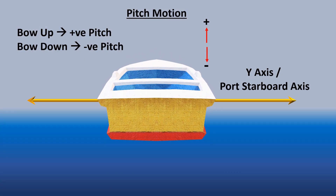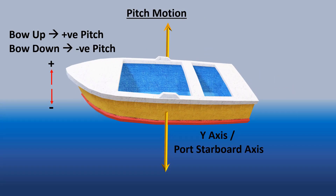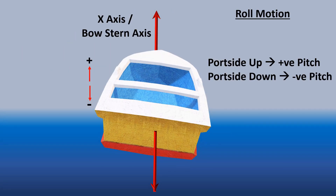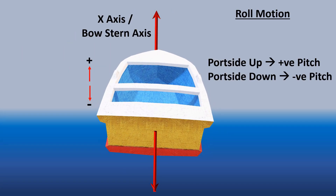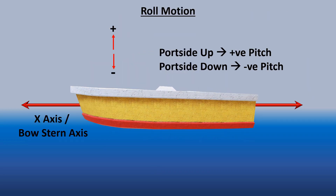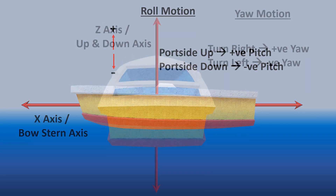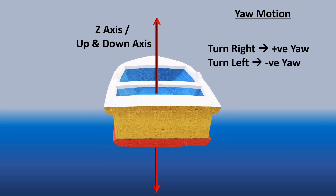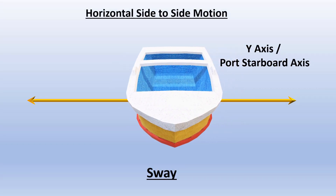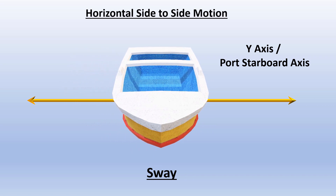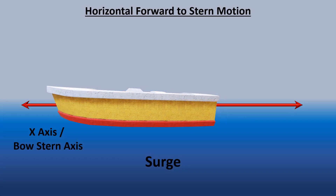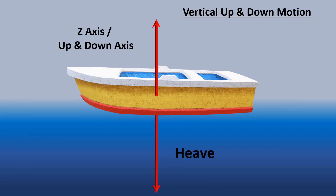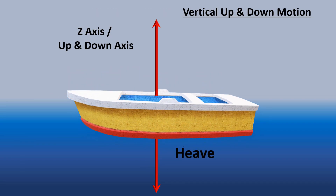This is pitch, looking from the back and from the side. Same way, roll looking from the back and from the side. Yaw as seen from the back. Sway is horizontal side-to-side movement. Surge is forward-to-back movement. And heave is vertical up-and-down movement.